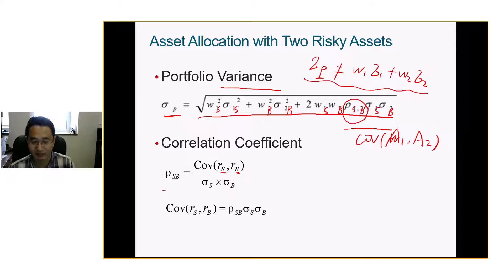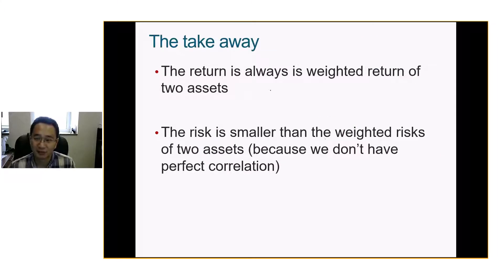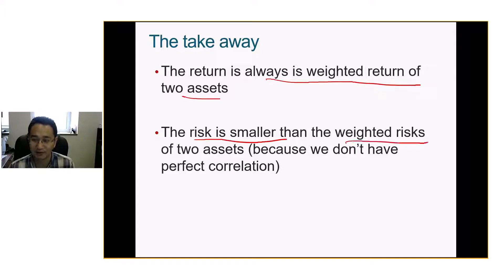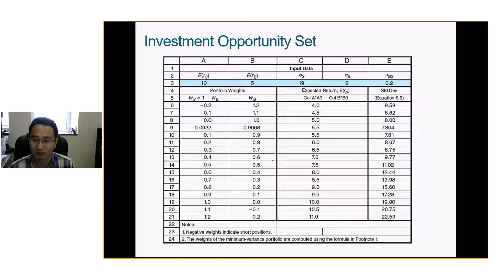This is how we calculate correlation and this is how covariance works. So the takeaway is: the return is always the weighted return of two assets, but the risk is smaller than the weighted risk of two assets because we don't have perfect correlation. So we have asset one return, asset two return, the standard deviation of stock, standard deviation of bonds, and the correlation of those two.